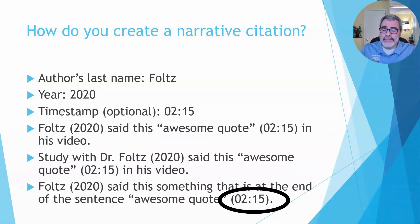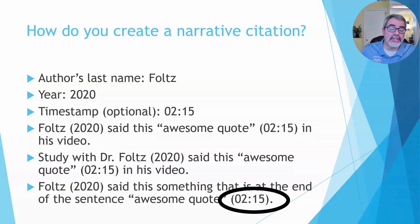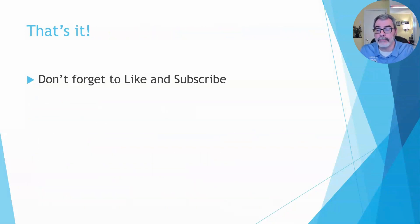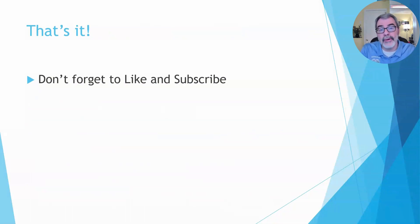Last but not least, if the piece of evidence is at the end of the sentence with a narrative citation, you want to put that timestamp after the piece of evidence but inside the period. So that's it — that's all we have to say about that. If you have any questions, by all means send me an email, leave a question in the comments, and as always like and subscribe. Have a great day.